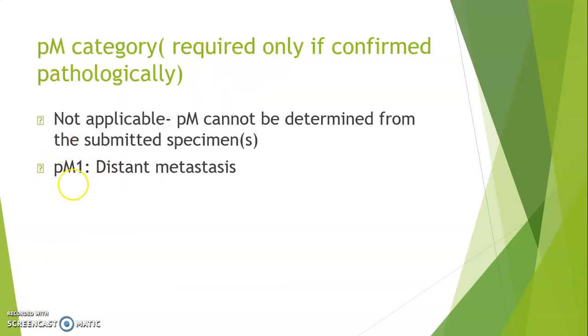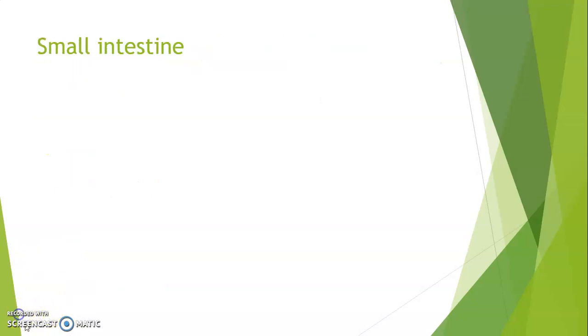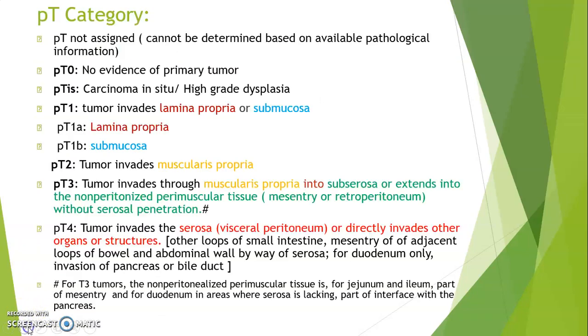PM category for stomach: PM1 when distant metastasis is seen.